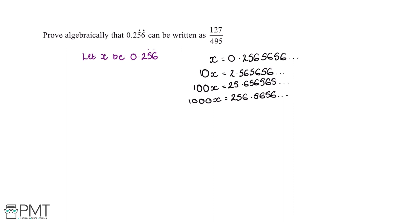Now what we can see is after the decimal point of 10x we have 5, 6 reoccurring, and after the decimal point of 1000x we also have 5, 6 reoccurring. So these are the two values which we'll want to use.